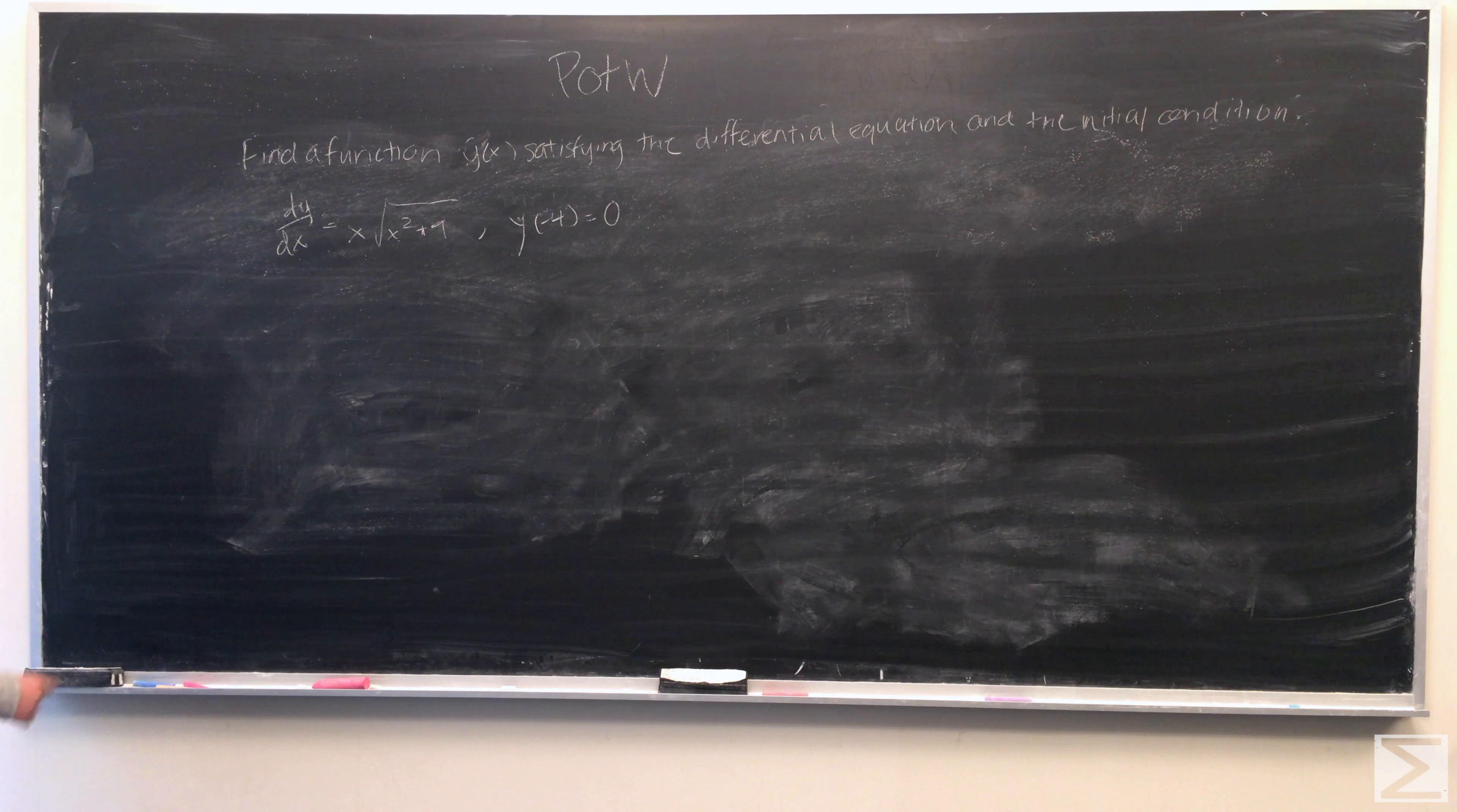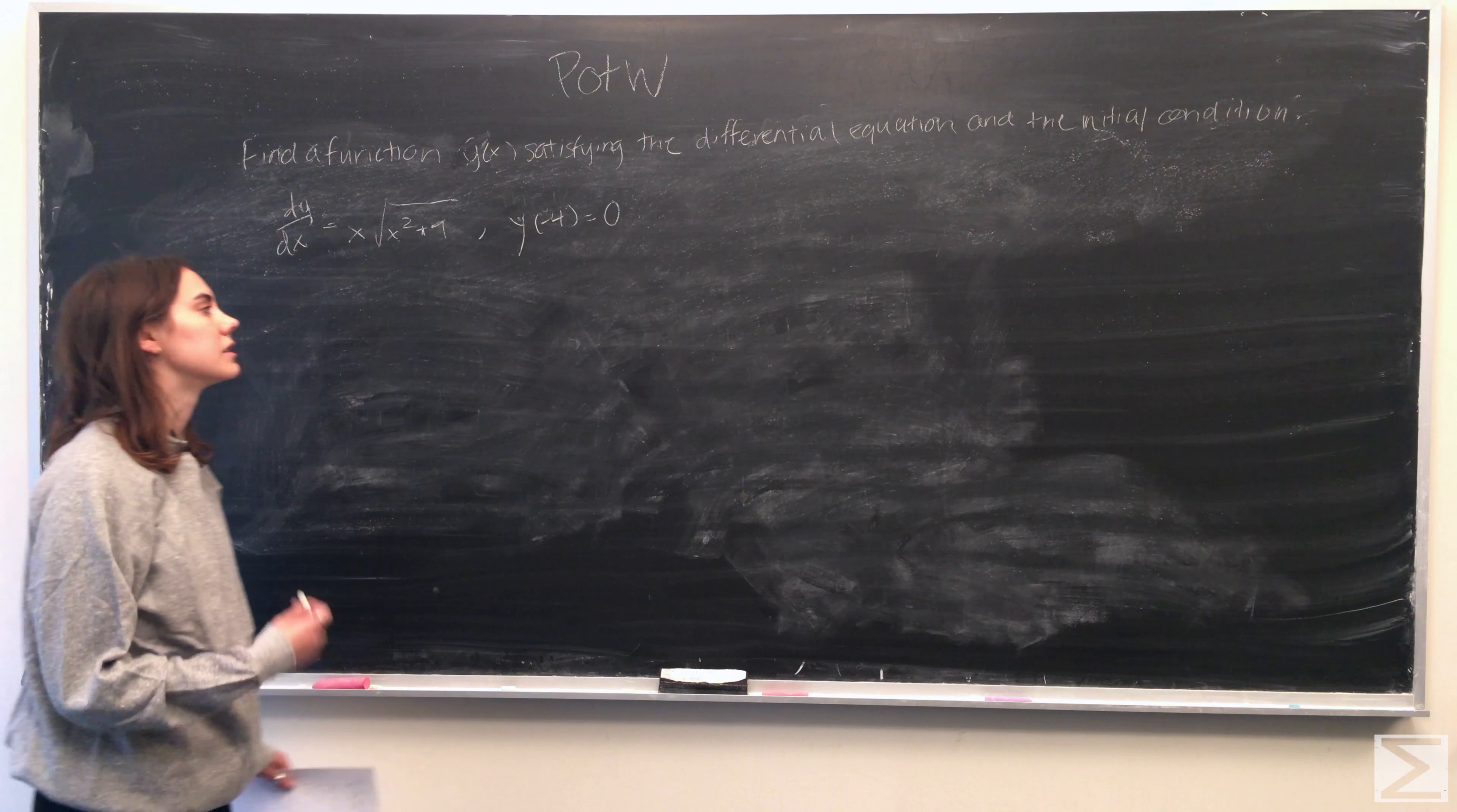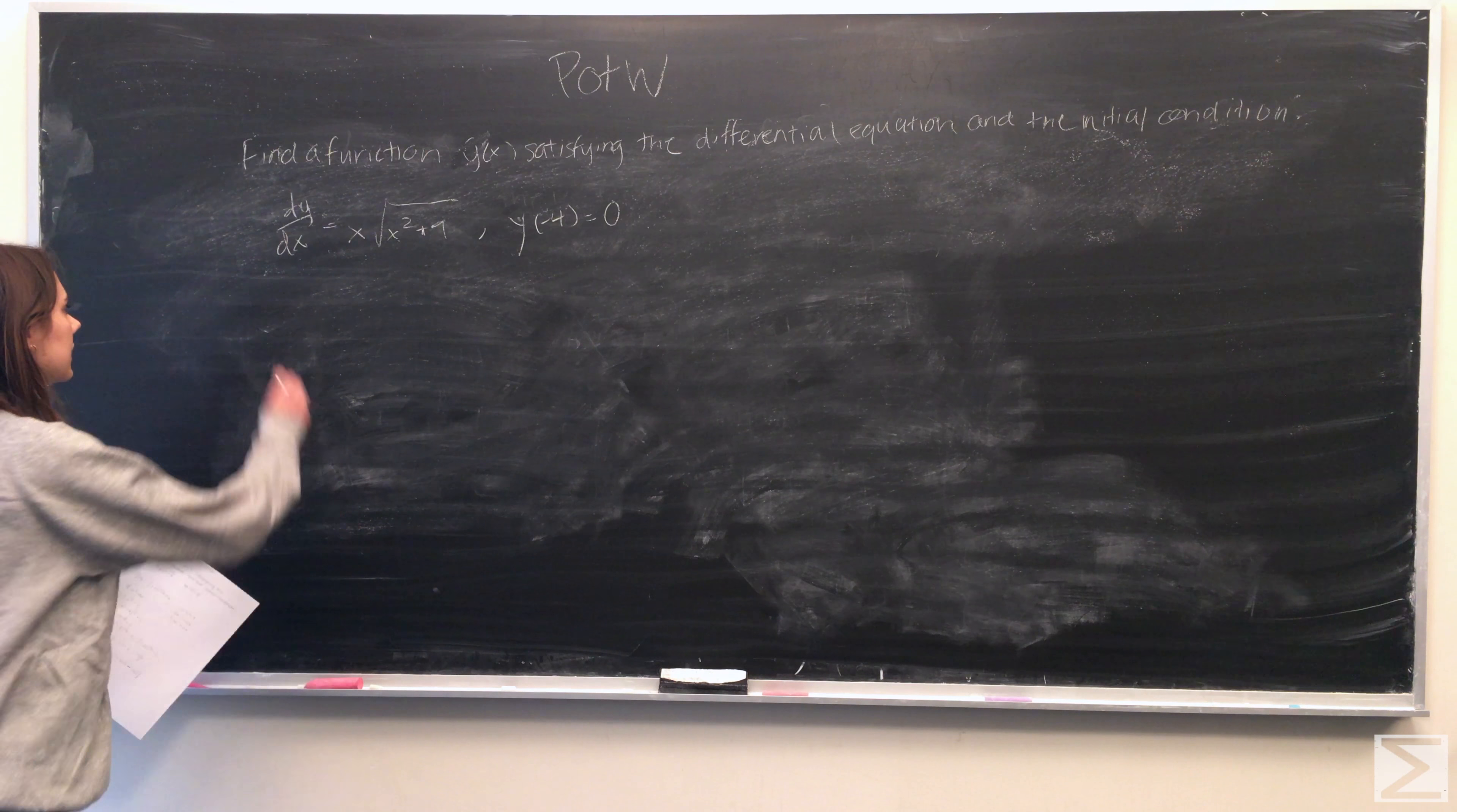The differential equation is dy over dx is equal to x times the square root of x squared plus 9. And the initial condition is that y of negative 4 is equal to 0.